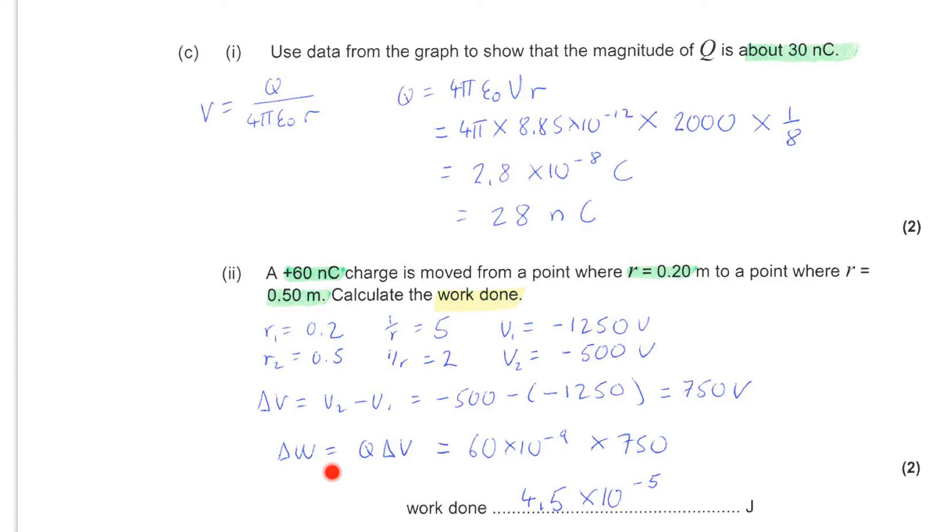So, we're looking for... We have a charge value here, but we're looking for the difference, the change in potential, as the charge is moved between these two points. Now, you just need to be a little bit careful, remembering that your graph was working with reciprocal values of r. So, r is 0.2, corresponds to the reciprocal being 5, and r of 0.5 corresponds to the reciprocal of r being 2.